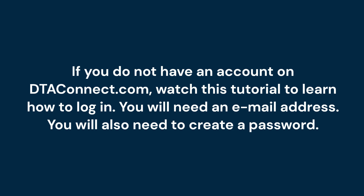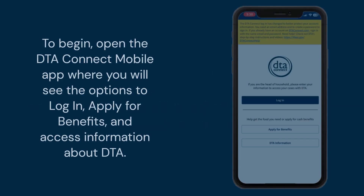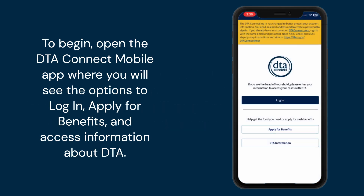You will need an email address. You will also need to create a password. To begin, open the DTAConnect mobile app where you will see the options to log in, apply for benefits, and access information about DTA.